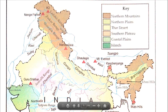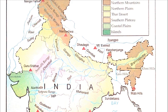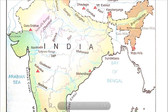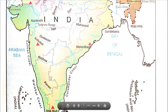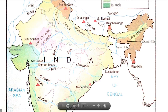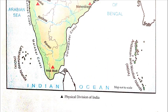Now looking at the physical divisions on the map — the 6 physical divisions are shown in 6 different colors. The brown color represents the Northern Mountains and eastern mountains. The light green color represents the Northern Plains. Below that is the Desert, the Thar Desert. Then the Southern Plateaus, followed by the Coastal Plains shown on both sides. Finally the Islands are shown here.